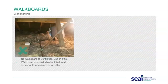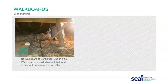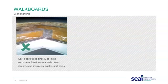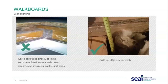Good workmanship shows the walk board accessing the full length of the attic down to the tanks. Another poor example shows the walk board fitted directly to joists with no battens fitted to raise it, resulting in compressed insulation beneath. The correct approach is to build walk boards up off the joists using battens so the insulation beneath is not compressed.